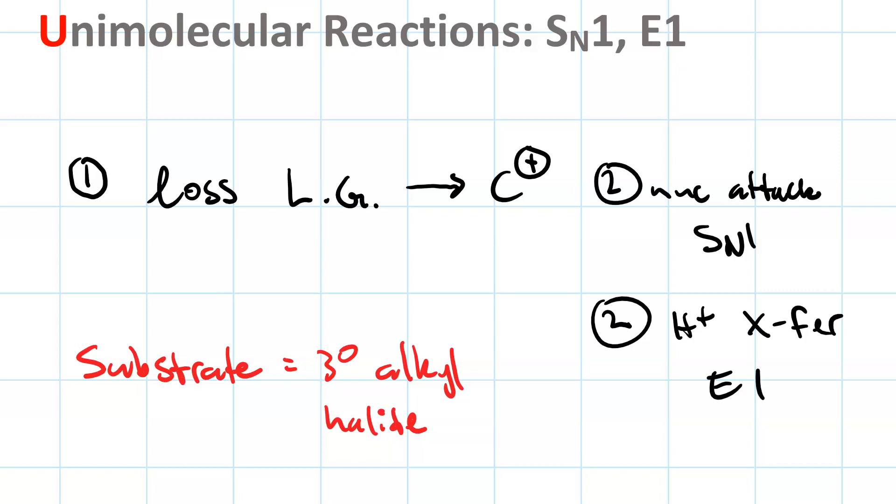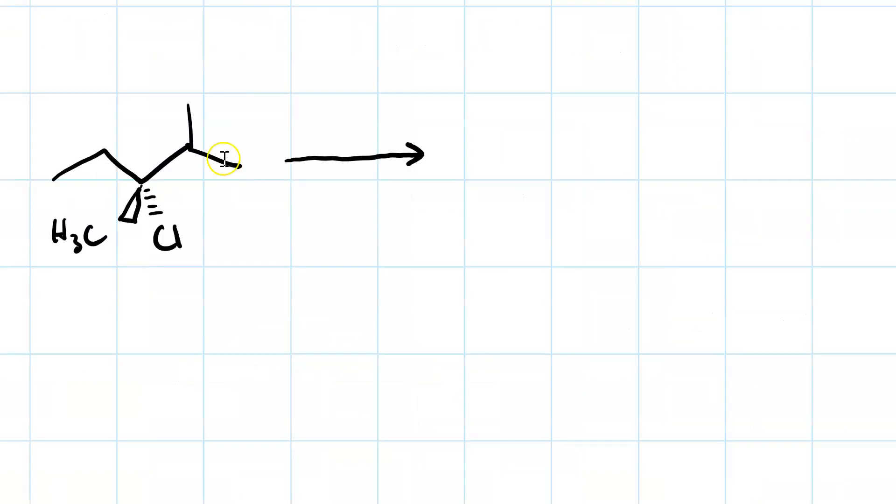Let's look at an example. Here's a tertiary alkyl halide, 3-chloro-2,3-dimethyl pentane. The stereochemistry is ABC, counterclockwise, with the lowest priority group on a wedge, so it's R. In any case, our first step is going to be loss of a leaving group.